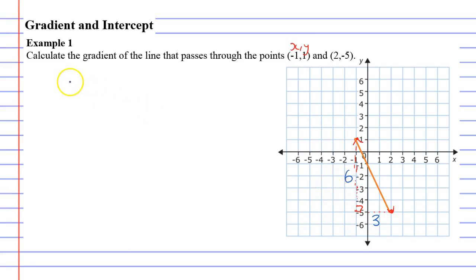So our gradient, the symbol of which is m, will be rise over run. And our rise is 6 and our run is 3, giving us a gradient of 2.